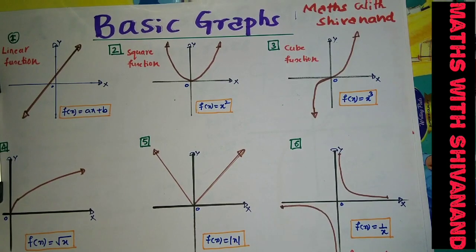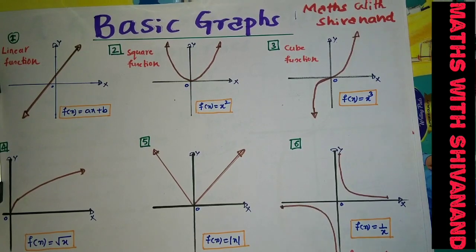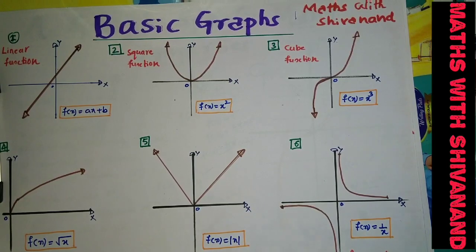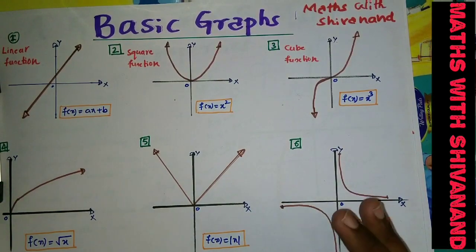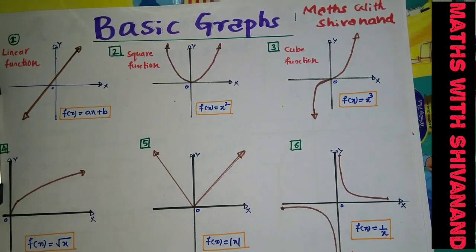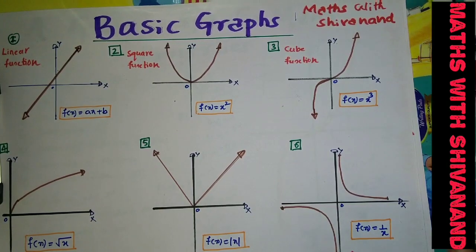What are all the basic graphs in mathematics that I need to understand perfectly? There are around seven varieties of basic graphs. I need to understand their behavior — how each one moves. If I understand the behavior of those graphs, I can interpret many graphs very easily.